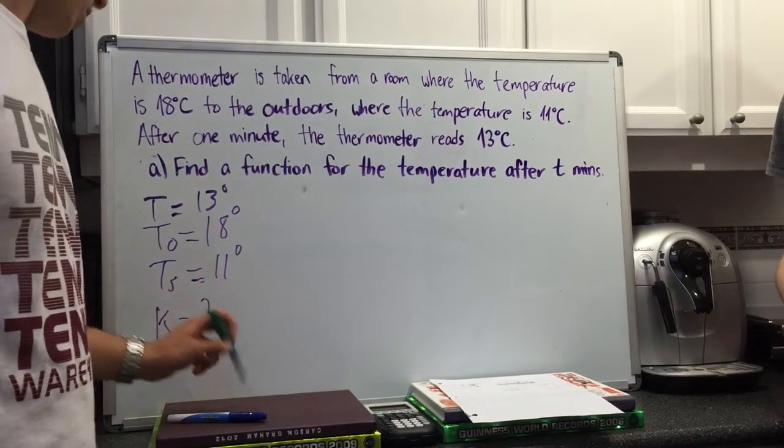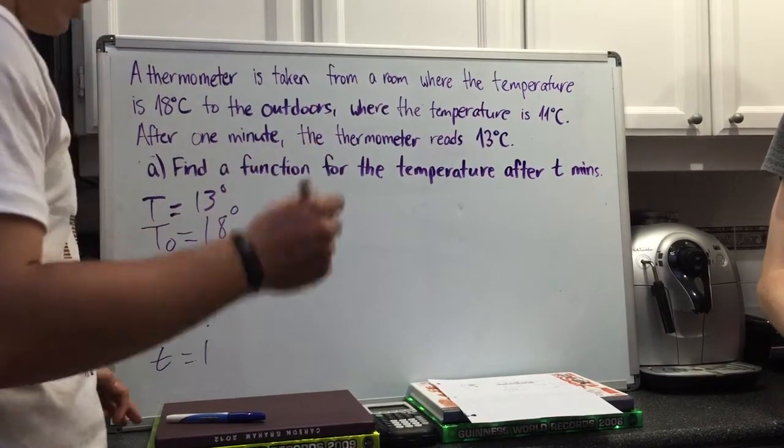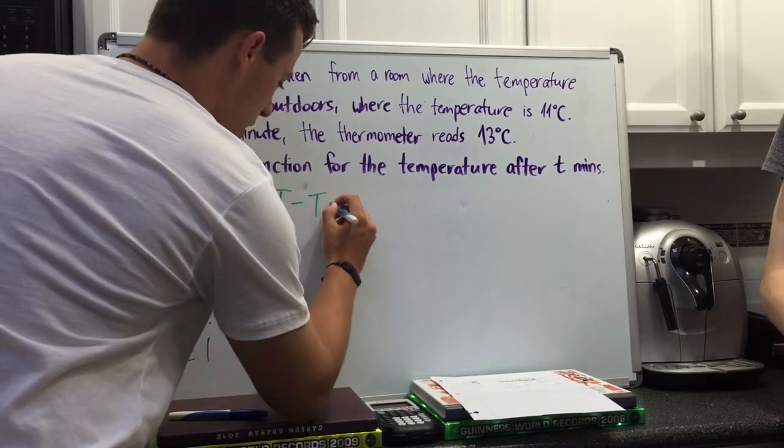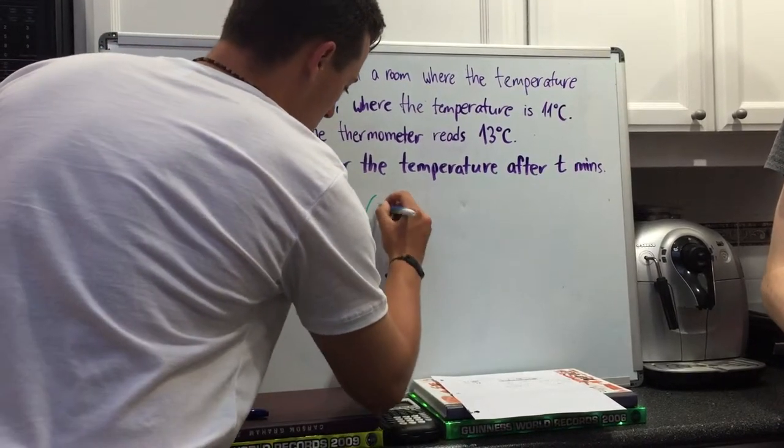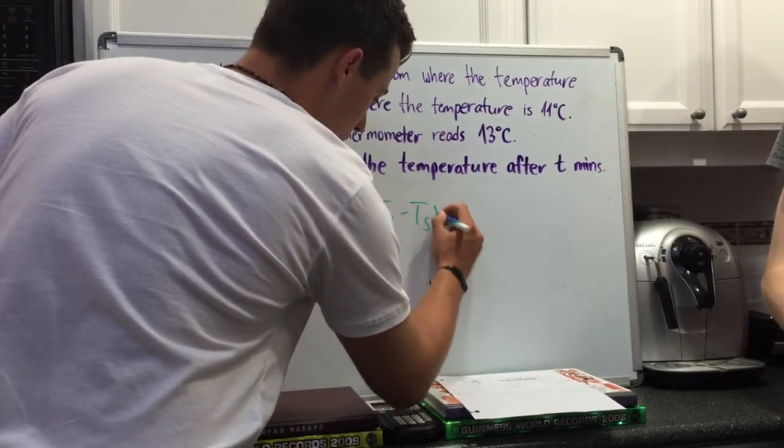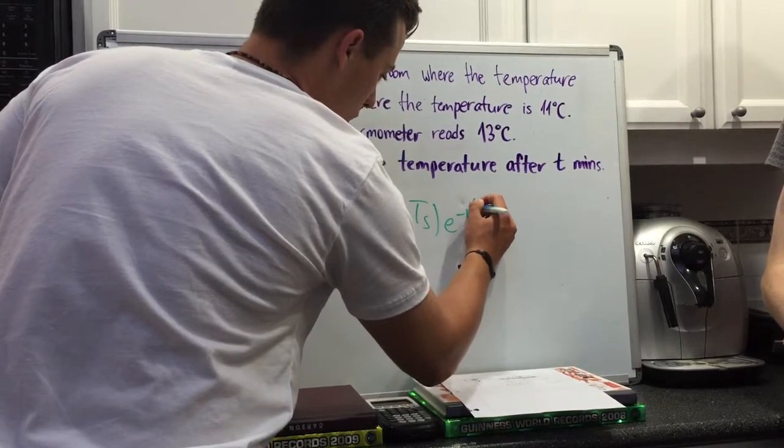Alright, so what we're looking for is K, and we're going to start off with the equation that's been given to us with this unit. T minus T_S equals, in brackets, T naught minus temperature of the surrounding area, e to the power of negative KT. And what we're looking for is K.